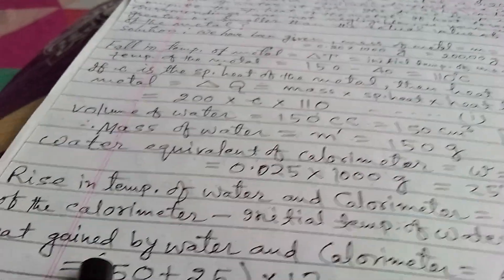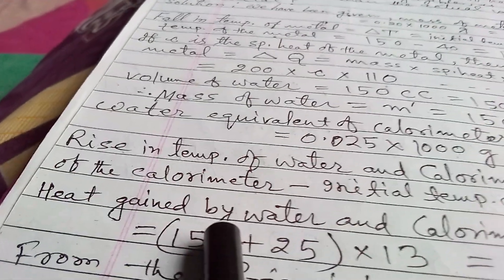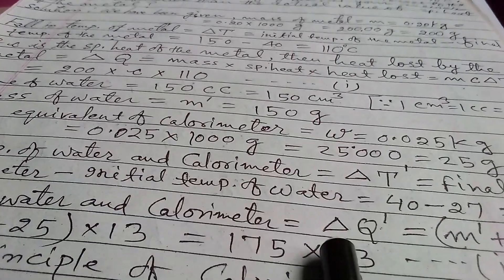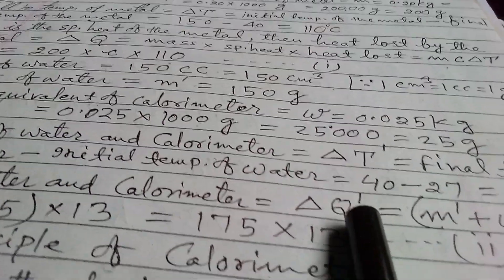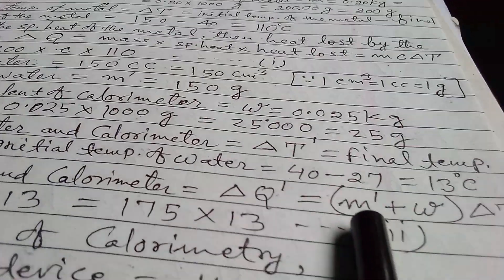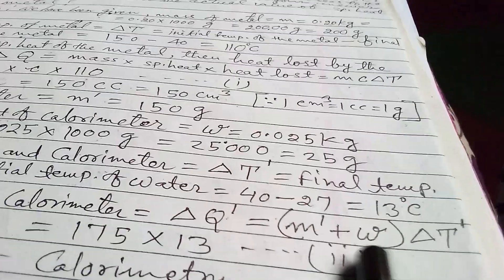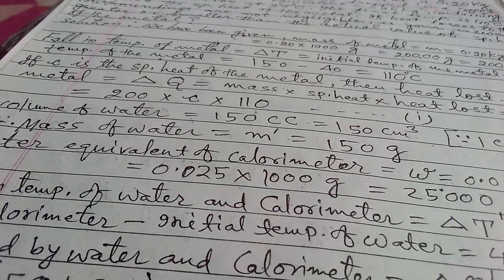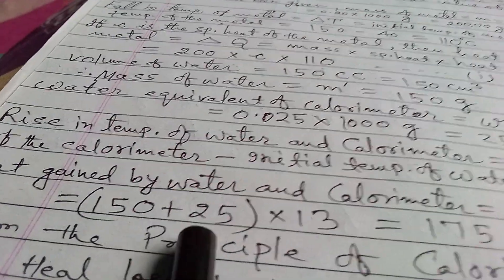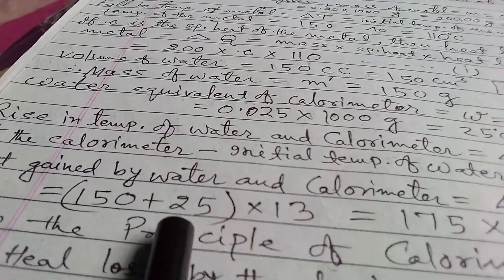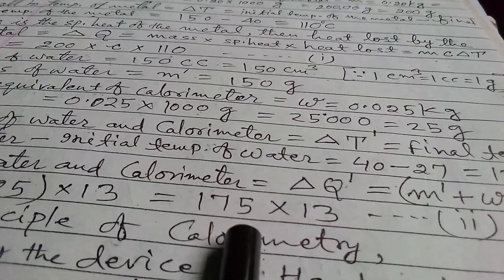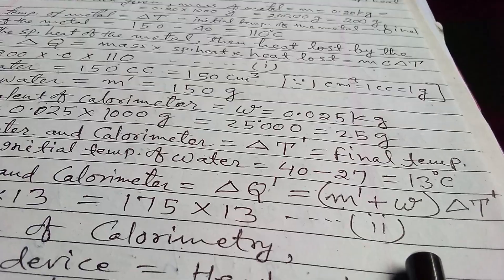Heat gained by water and calorimeter, delta Q', equals to (M' plus W) into delta T', that equals to (150 plus 25) into 13, that equals to 175 into 13. This is the second equation.